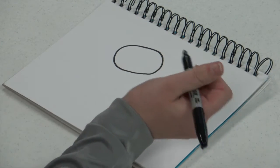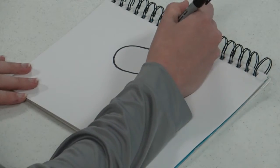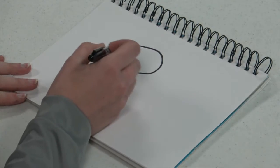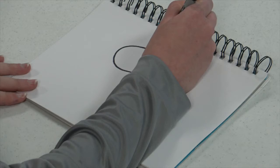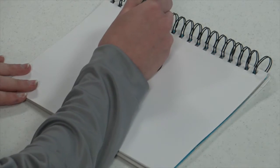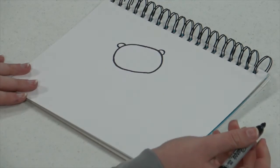Now we're gonna add two small half circles on the top of the head for the little ears. Then you're gonna add two smaller circles to be the inside of the ear.